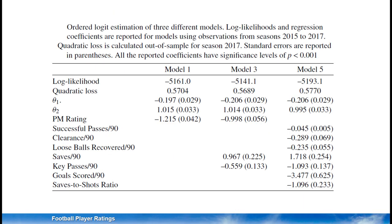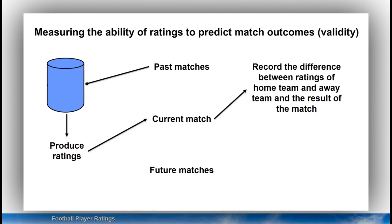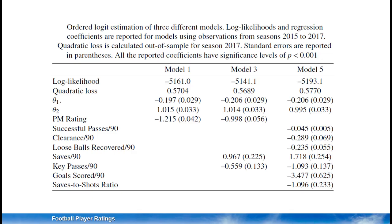What other information can we get by counting events? That is, what information is contained in the events that is not properly picked up by the plus-minus ratings? To examine this, we use an ordered logit regression model that we use to predict the outcome of football matches based on historical results.